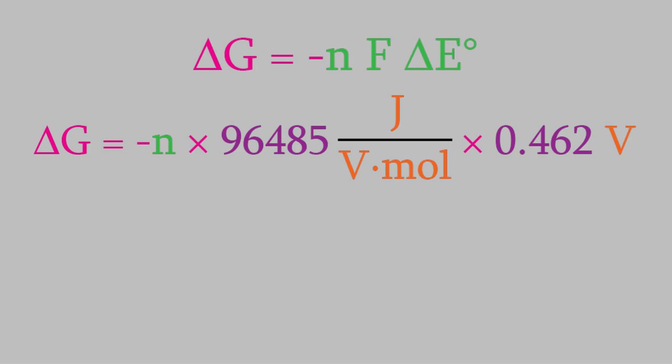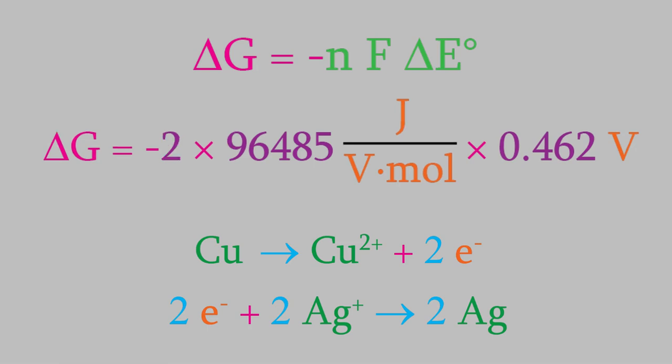Back in those earlier videos, we saw that the half-reactions are these. N is the number of electrons transferred in the overall reaction, and the half-reactions show us that two electrons were transferred. So N is two.